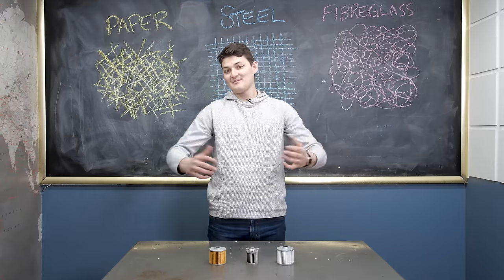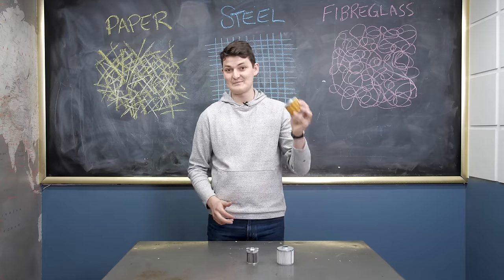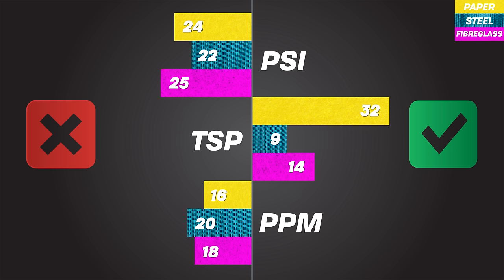This is one of those happy results that vindicates the cheap bastard. Paper filters are best. Steel had higher flow but terrible capacity and poor filtration. While fiberglass failed to shine anywhere, which is unacceptable for a so-called performance upgrade.